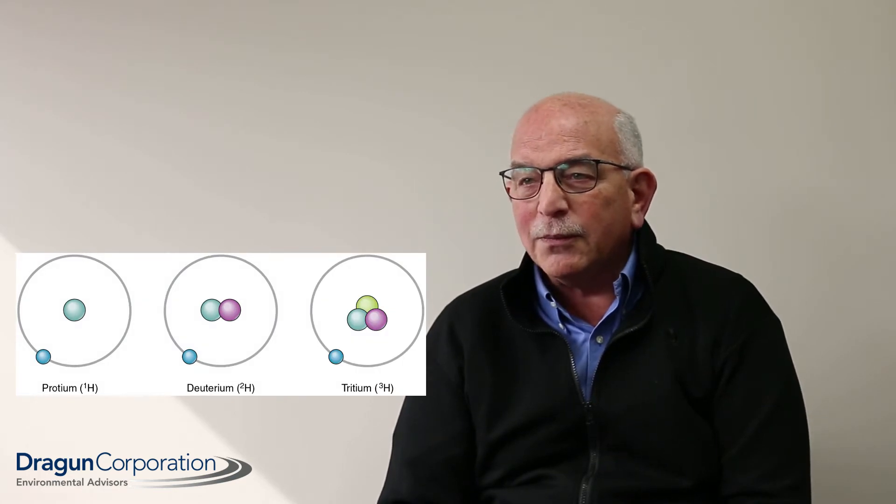Protium has no neutrons, deuterium has one neutron, and tritium has two neutrons. We can use these isotopes as tracers in the environment because the chemicals that have the various isotopes have different masses and they tend to separate in environmental processes.